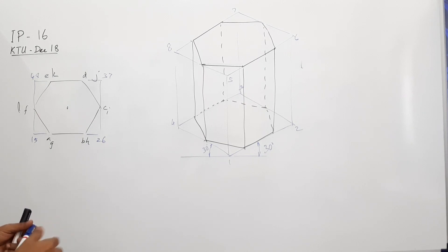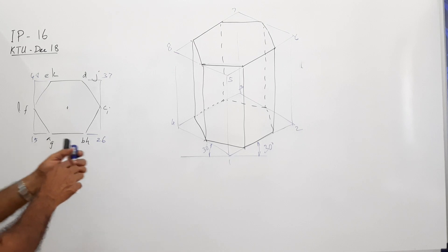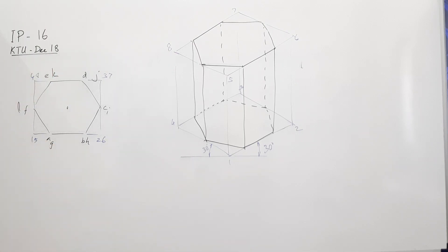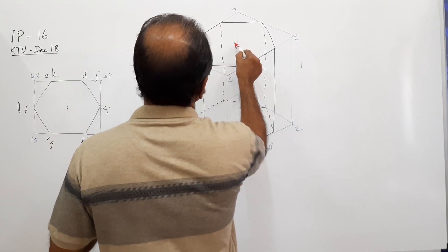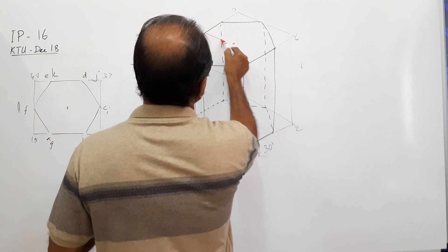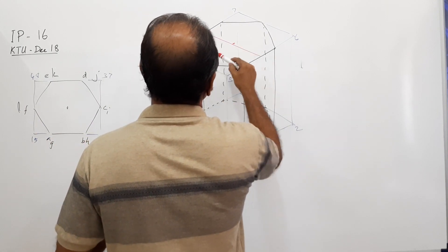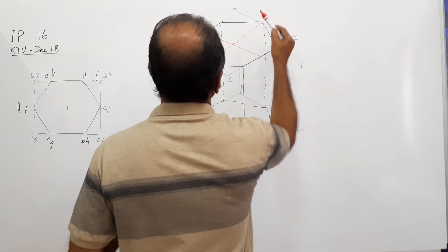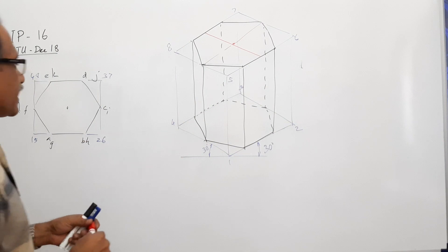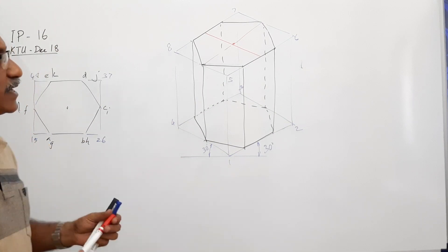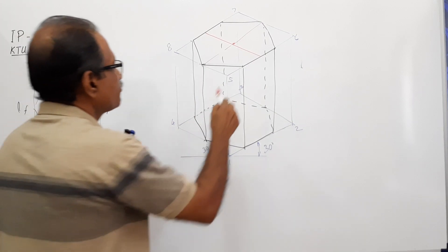The circular hole. That is the center of the top hexagonal. Measure, what is the diameter of the hole? The diameter of the hole is 30. Measure 15 to either side.